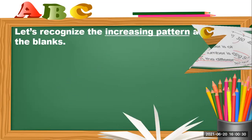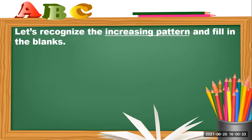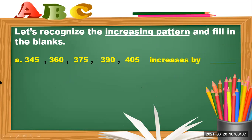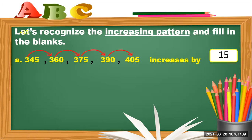Now let's try to recognize the increasing pattern and fill in the blanks. In letter A, starting from 345: 345 to 360, 360 to 375, 375 to 390, 390 to 405. Remember, if the word is 'increasing,' that means you have to add. It increases by 15, so plus 15 each time.